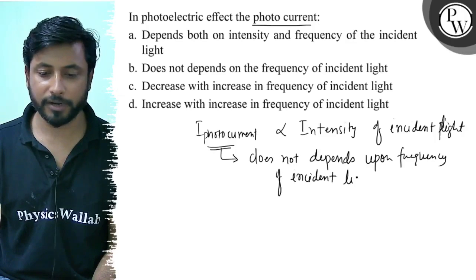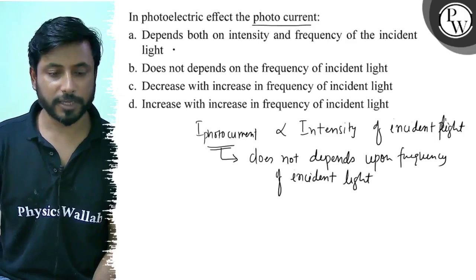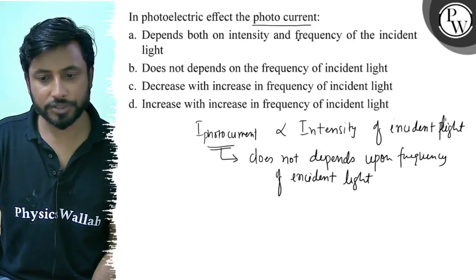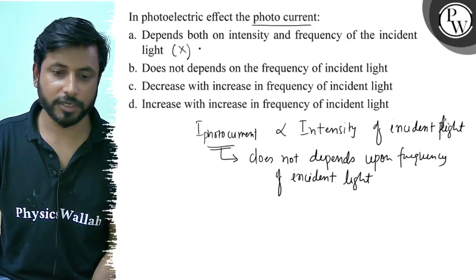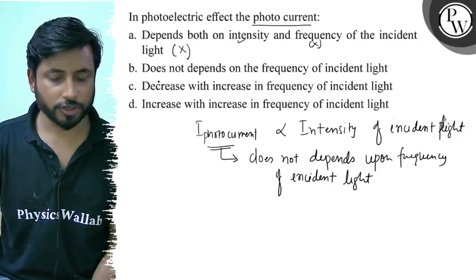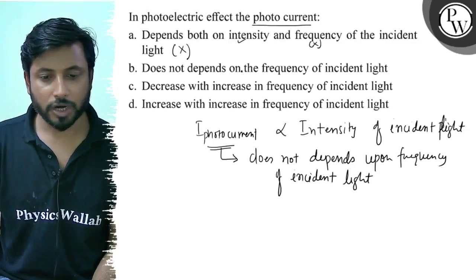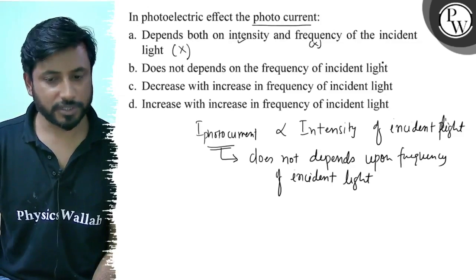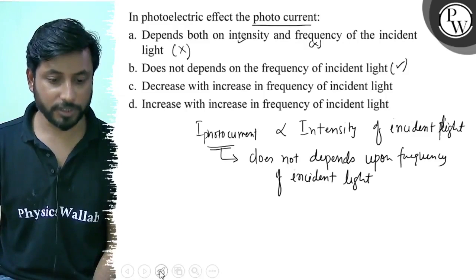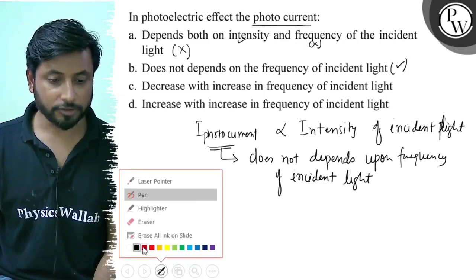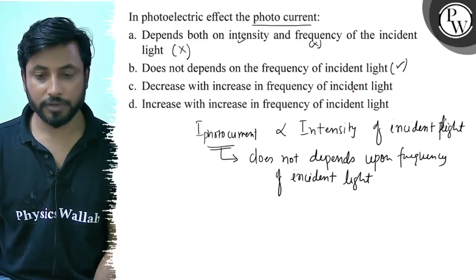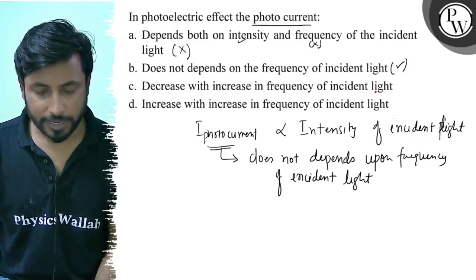The frequency does not affect photo current. Option A says it depends on both intensity and frequency of incident light — intensity pe karta hai, but frequency pe nahi karta, so both together makes it wrong. Option C says it decreases with increase in frequency of incident light, which also implies frequency dependence.